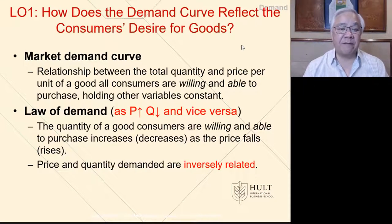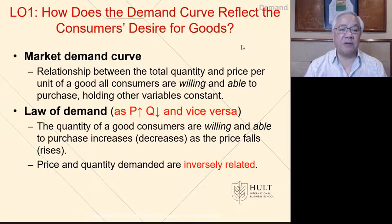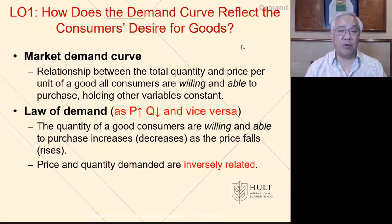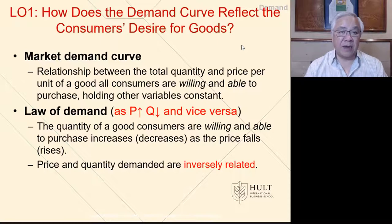How does the demand curve reflect the consumer's desire for goods? The market demand curve shows the relationship of the quantity and price per unit of a good that all consumers are willing and able to purchase, holding all other items constant. The law of demand holds that the quantity of goods that customers are willing and able to purchase will increase as the price falls, and will decrease as the price rises. Price and quantity are therefore inversely related.